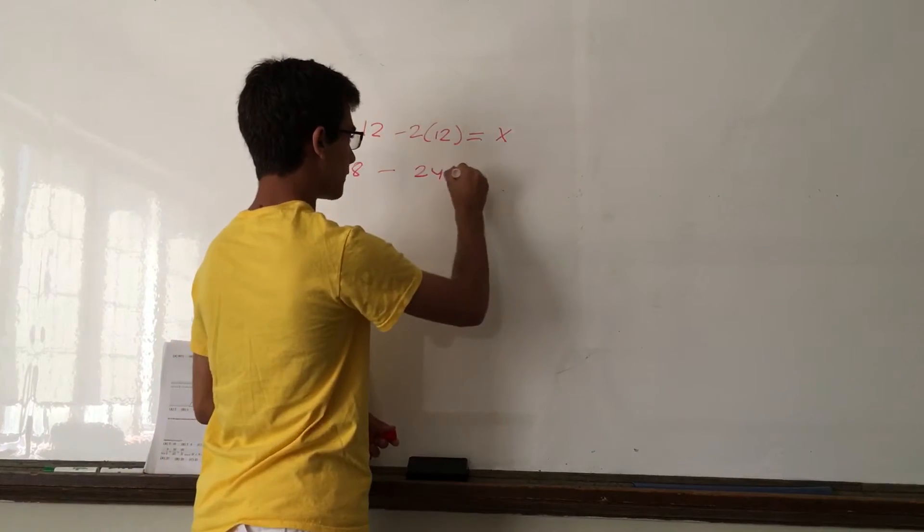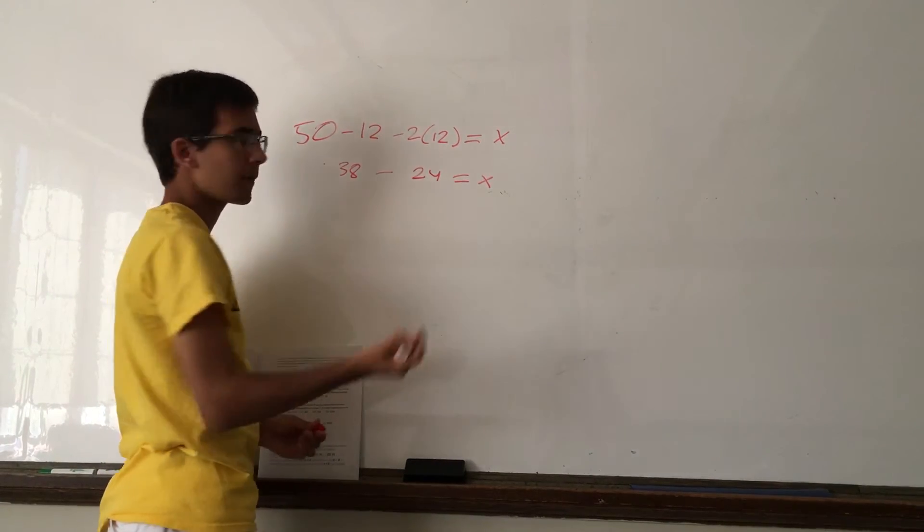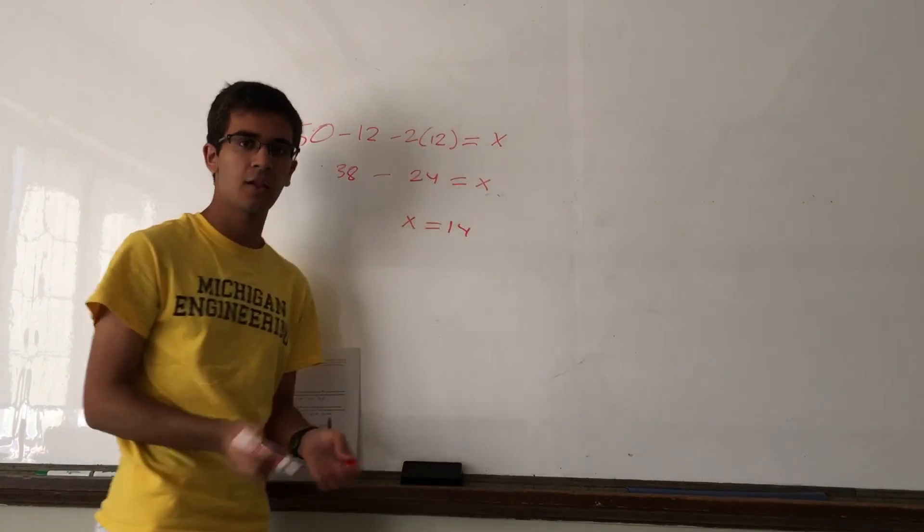So, 38 minus 24 equals X. 38 minus 24, if we think about it, is 14. So, Susan has $14 left to spend.